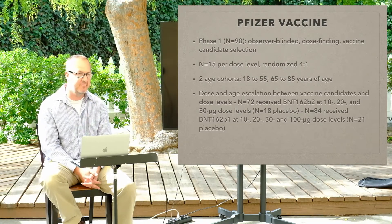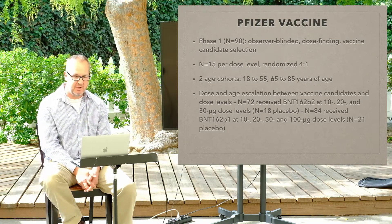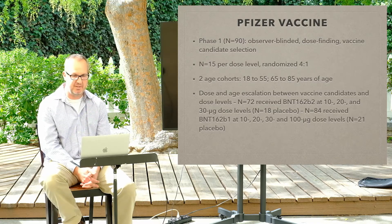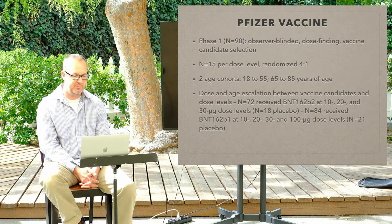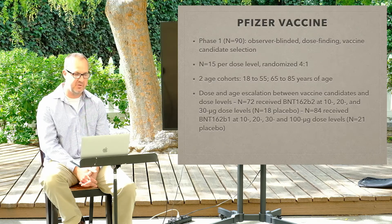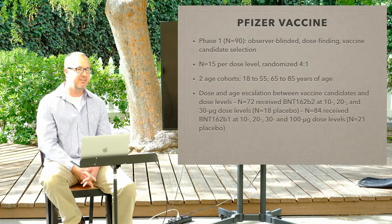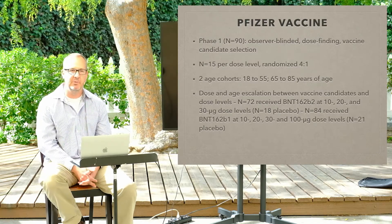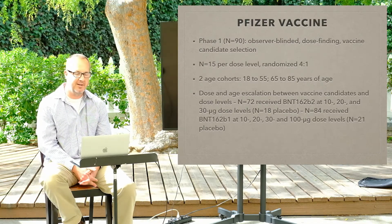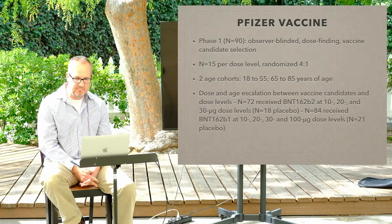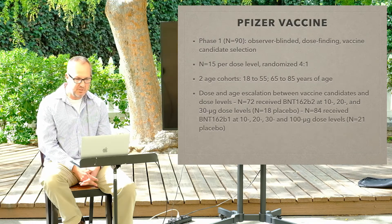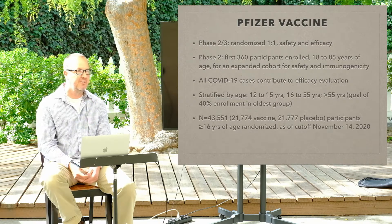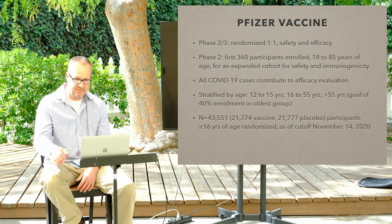Second stage, they get a few hundred people — safety tests again, this time with older people, younger people, people with different conditions. Then stage three, they get like 40,000 people. Each time, half the people get it, half don't. A placebo basically means you give someone a shot with nothing in it, and then the vaccine is the real thing.